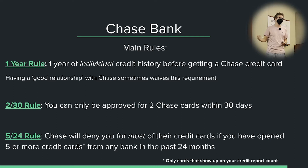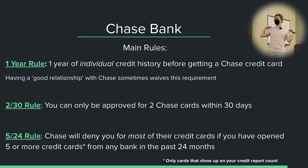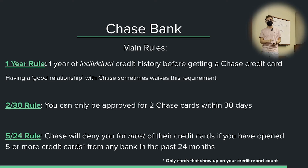Just having more cards, if you're still below 5/24, will it still hurt your chances? It will still hurt your chances because you have a higher velocity — you've opened a lot of cards fairly recently — but if you're below 5/24, it's not an automatic denial. What used to be the case is that if you were above 5/24, applying for any Chase card was an instant denial with no way around it. Now it's become more of a soft rule and doesn't apply for all Chase cards. For example, the Southwest cards and the Amazon cards — the personal versions — are not necessarily fully affected by 5/24.